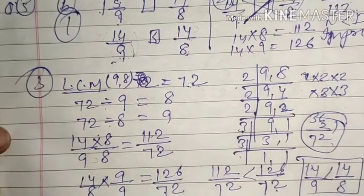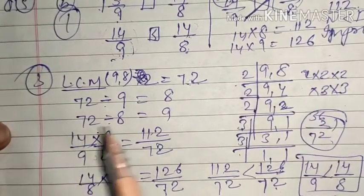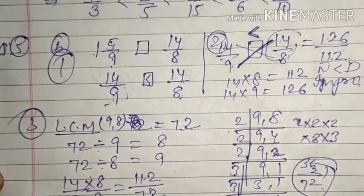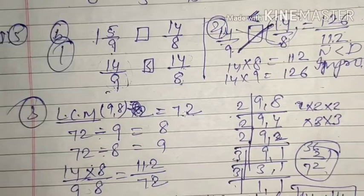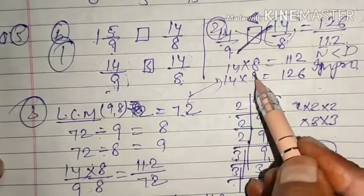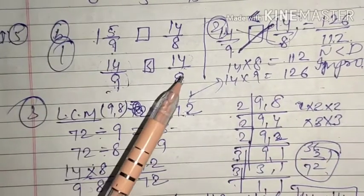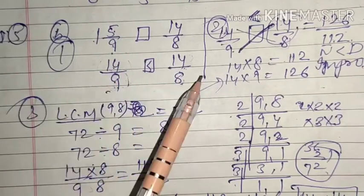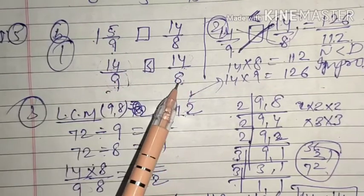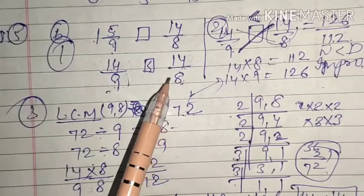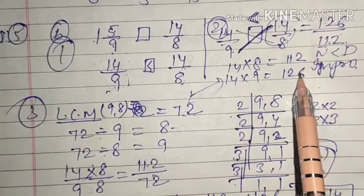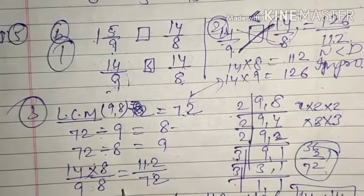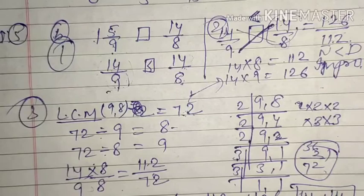In all three methods we get the same answer — you can use whichever you like. Generally you will use any one of these. It's possible that both numerator and denominators are different, and in that condition either cross multiplication or LCM method must be used. The rest of the things we will see in the next class. Thank you.